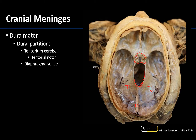The diaphragma sellae covers the sella turcica of the sphenoid bone and forms a roof over the hypophysial fossa. It will have an aperture for the infundibulum, or the pituitary stalk, because the posterior pituitary is located in this region. This partition is the smallest and least dense, so a good amount of it has been removed in this dissection, but understanding where the diaphragma sellae would be located is sufficient, as it is often not very visible in dissections.